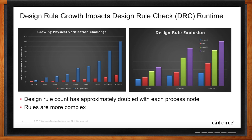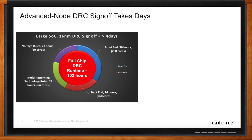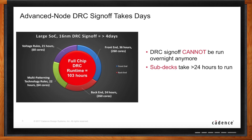A lot of people in the market think DRC is fine — they used to run the DRC tool overnight and that was fine. But 28 nanometer was a tipping point. We have examples of customers running with the leading DRC solution today at 16 nanometer, and even though they break their subdeck into four different decks, they still need four days to run a full iteration. And that's one iteration. That's far from overnight.